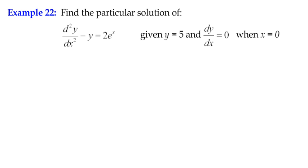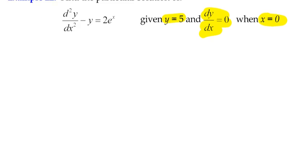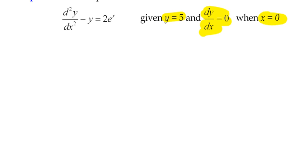We've got a second order differential equation. It's non-homogeneous because f(x) equals 2e to the power x, and we've got some particular conditions, just like in example 21. Because it's non-homogeneous, in order to start the solution we're going to consider the homogeneous version of this equation.